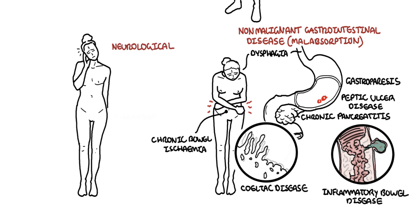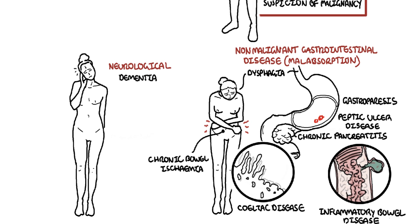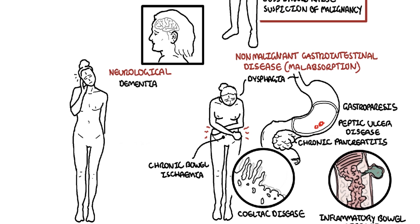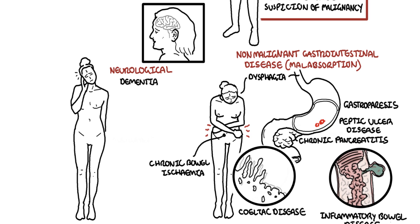Neurological causes of weight loss include dementia, because patients are forgetting and have trouble eating by themselves. Parkinson's disease and motor neuron disease can also manifest with dysphagia.